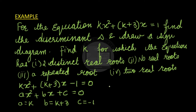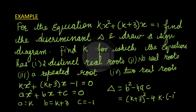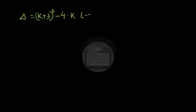We know the discriminant delta equals b squared minus 4ac. So b squared means (k plus 3) whole squared, minus 4 times k times negative 1. This gives us delta equals (k plus 3) whole squared plus 4k.